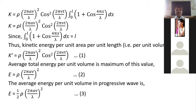The kinetic energy per unit volume is maximum when cos²(2πvt/λ) = 1. This maximum value is ρ · (2πav/λ)², and this equals the average total energy per unit volume of the stationary wave.